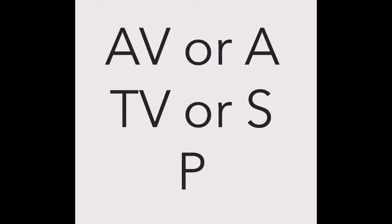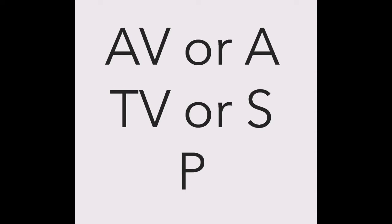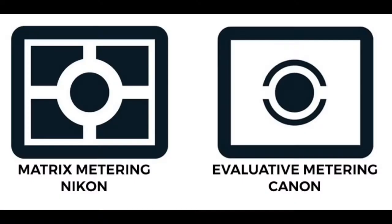Those modes are Av (aperture priority, or A on other cameras), Tv (shutter priority, or S on other cameras), and P. Exposure compensation works in those modes, and also when you're in evaluative exposure mode or matrix mode on other cameras.